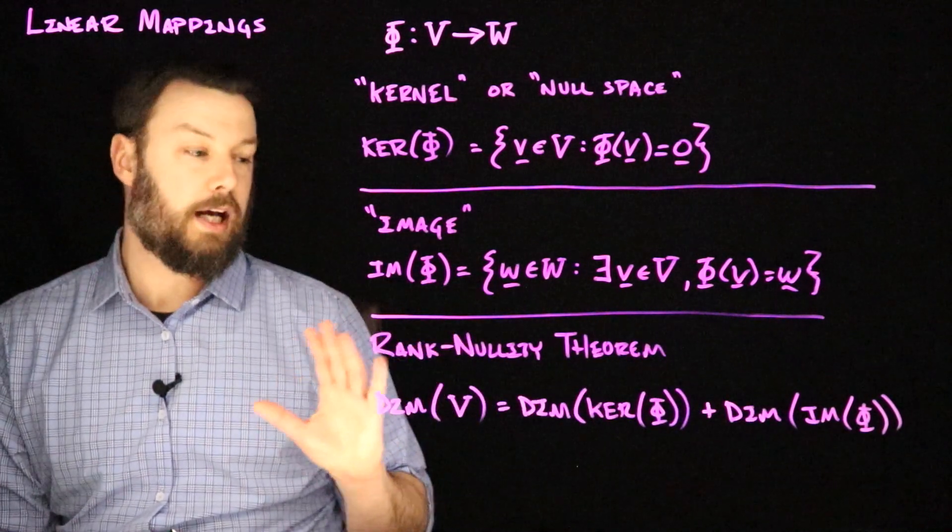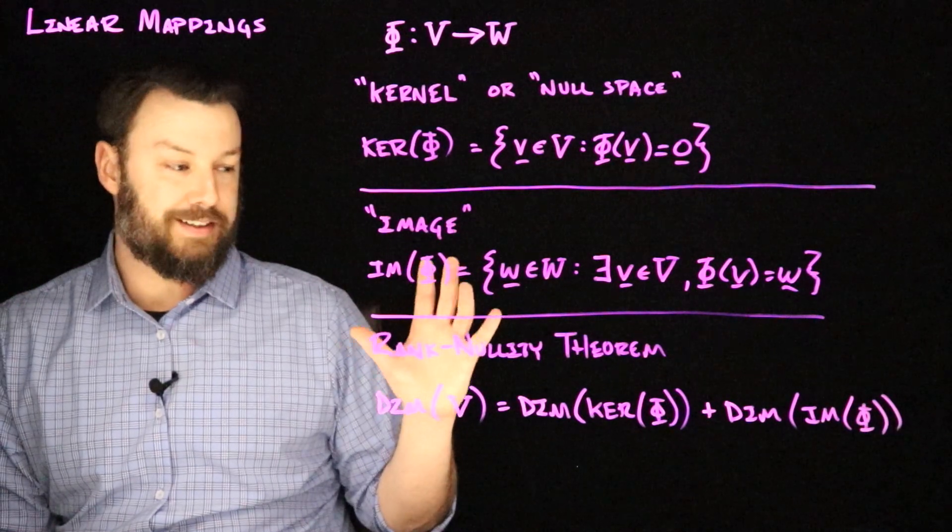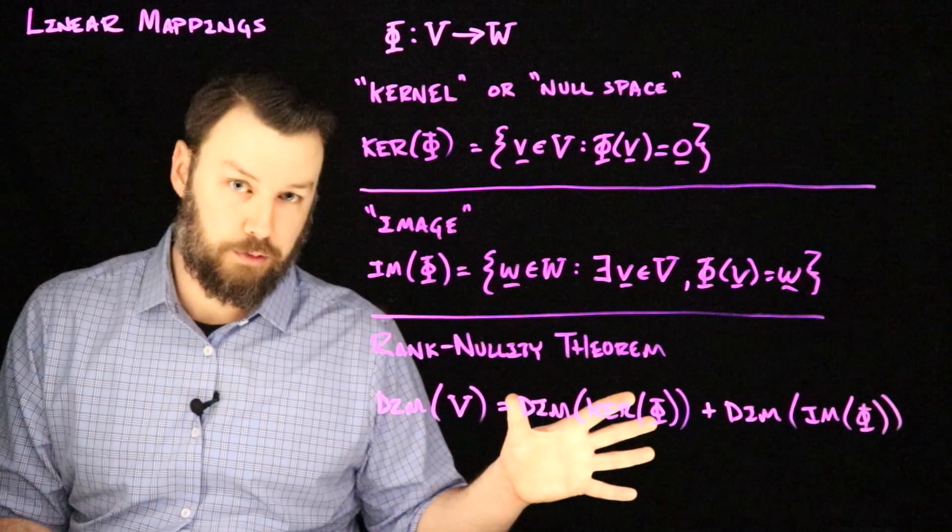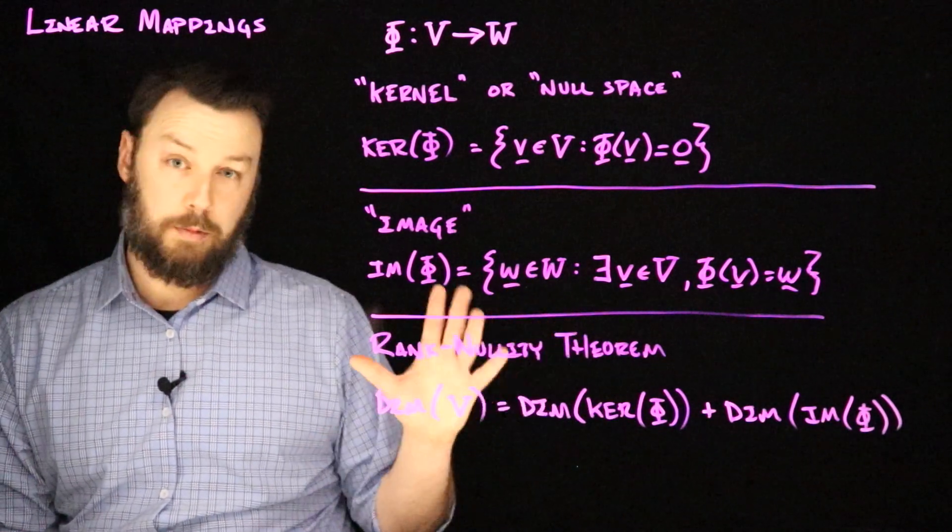Note, of course, as usual, that this notion of dimension does not have to depend on sort of the number of components in the vector. The dimension might be more general than that.